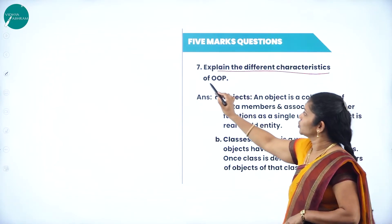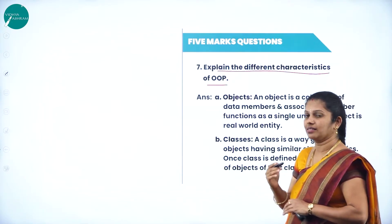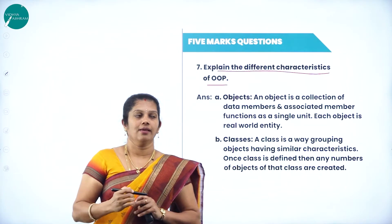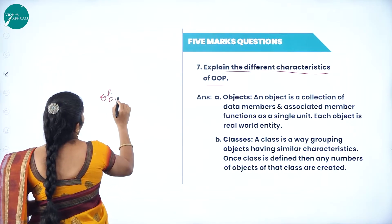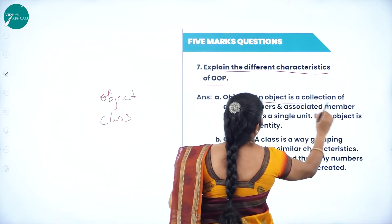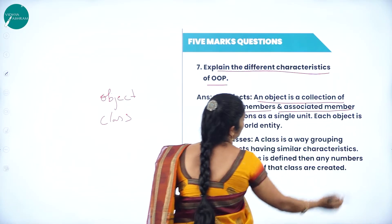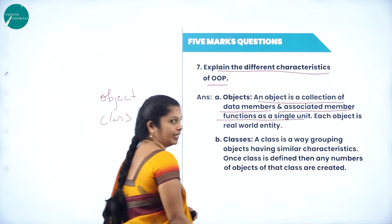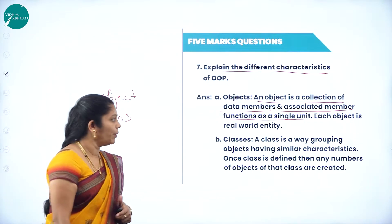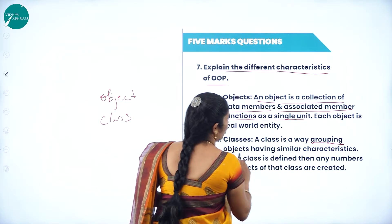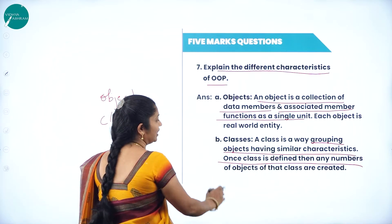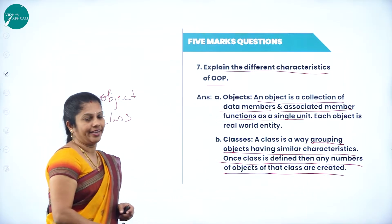Explaining the different characteristics of OOP: when we come to features of OOP, there are several features. First, we have object — a collection of data items and associated member functions as a single unit, and each object is a real-world entity. Then, we have class — a grouping of objects having similar characteristics. Once a class is defined, any number of objects of that class can be created.